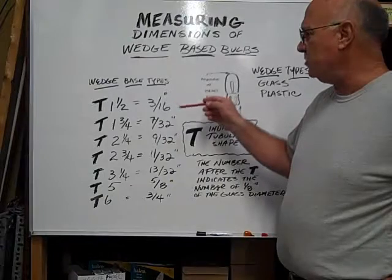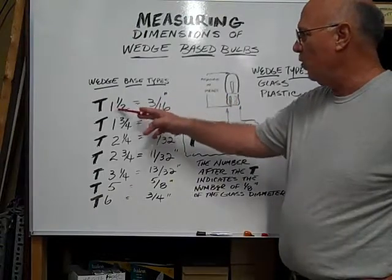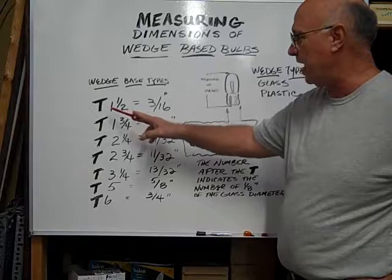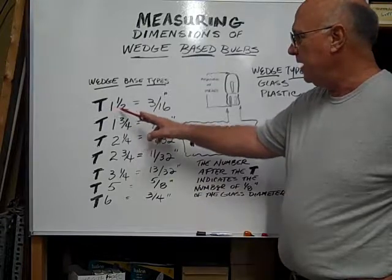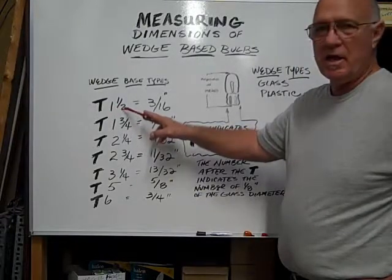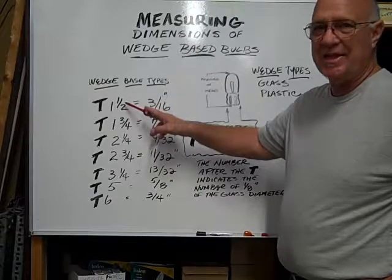The smallest size usually is a T one and a half. Now the T again is tubular shaped. The one and a half denotes the dimension in eighths of an inch.